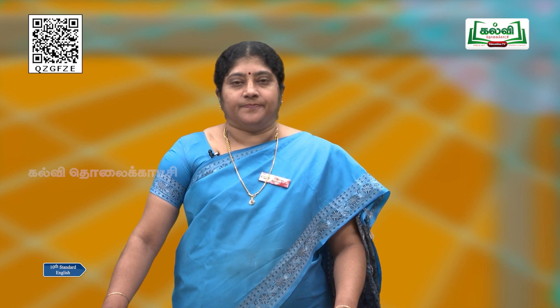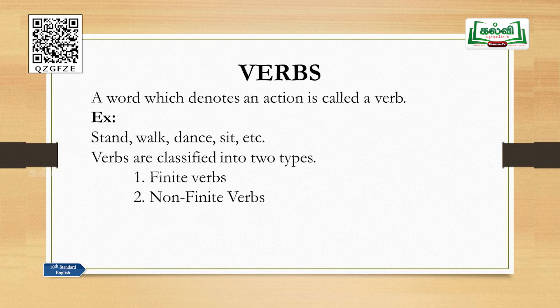Let me introduce verbs to you first. What is a verb? You have already come across a noun and a verb. A noun is a naming word — it is a name of a person, place, animal or thing — whereas a verb is an action word. A word which denotes an action is called a verb. Examples: stand, walk, dance, sit, teach, learn. All these are examples for verbs, and verbs are classified into two types.